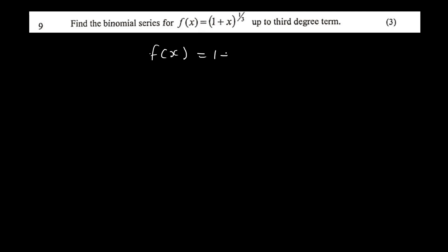Find the binomial series for f(x) = (1+x)^(1/3) up to the third degree term. For the binomial series expansion, f(x) equals (1+x) raised to m.